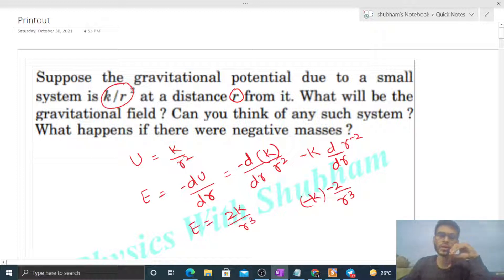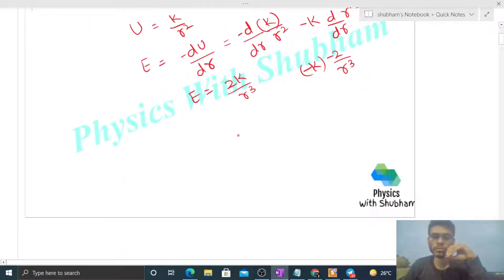Now here we see that the field is inversely proportional to r³ and the potential is inversely proportional to r².